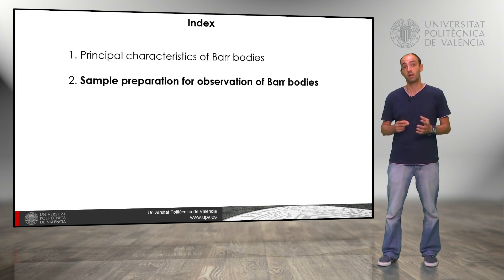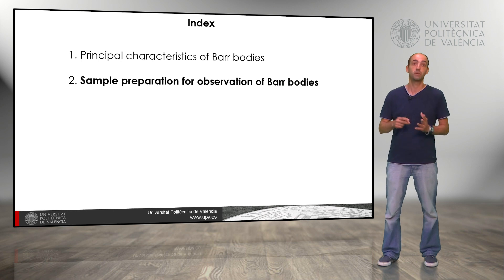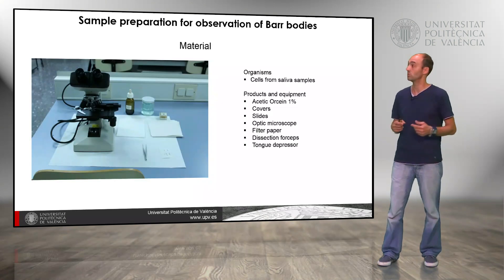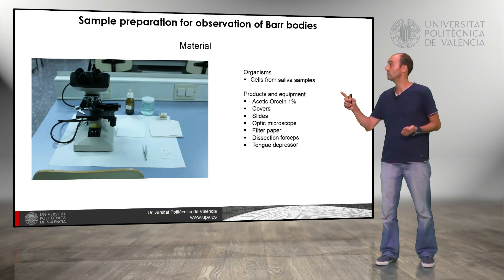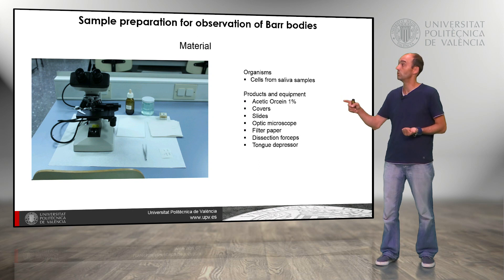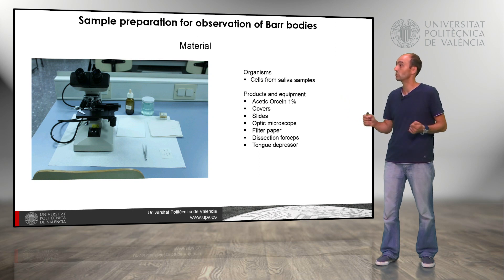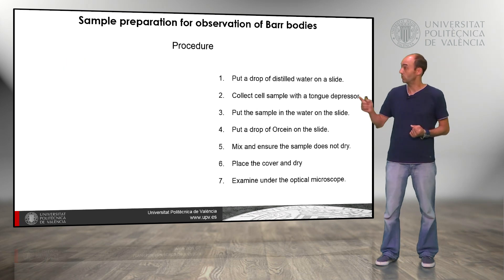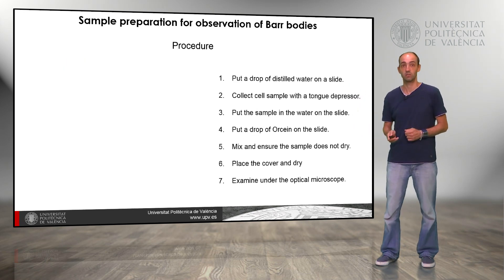Now we are going to see how to prepare the samples for observation of bar bodies at the laboratory. We need some equipment: we need cells — in this case we are going to use cells from saliva. We also need orcein stain, coverslips, slides, a microscope, filter paper, forceps, and a tongue depressor. We are going to follow the steps that we will explain in detail.